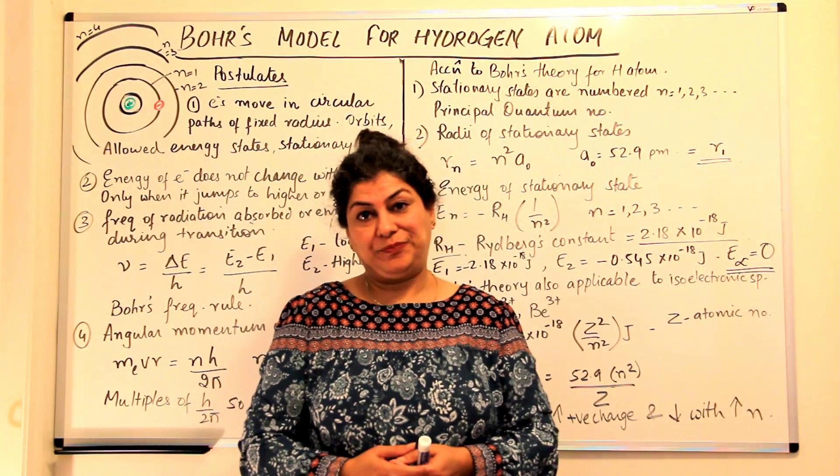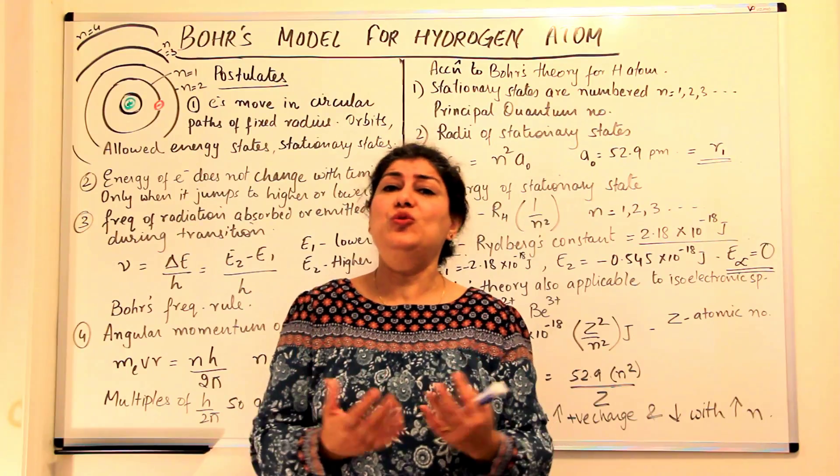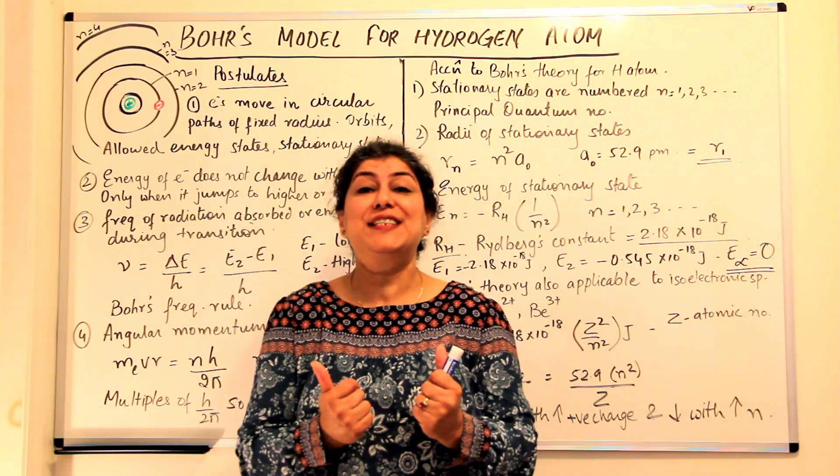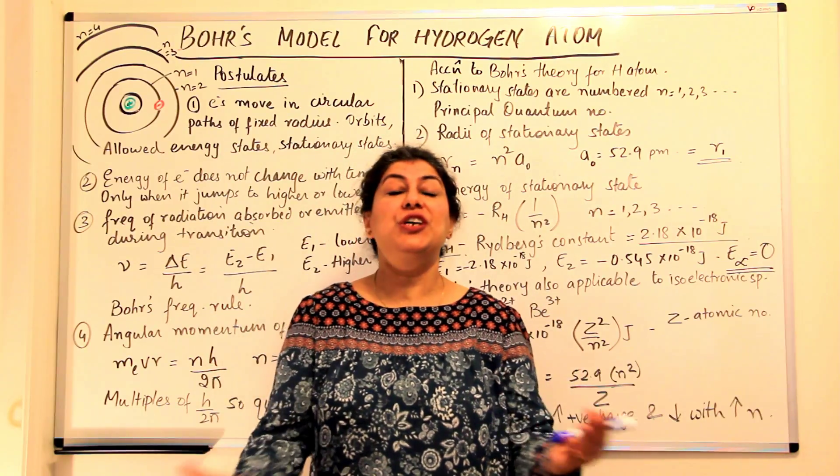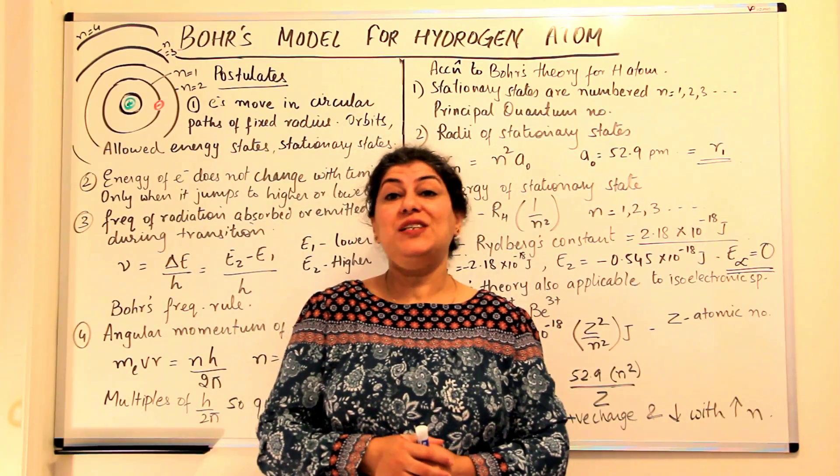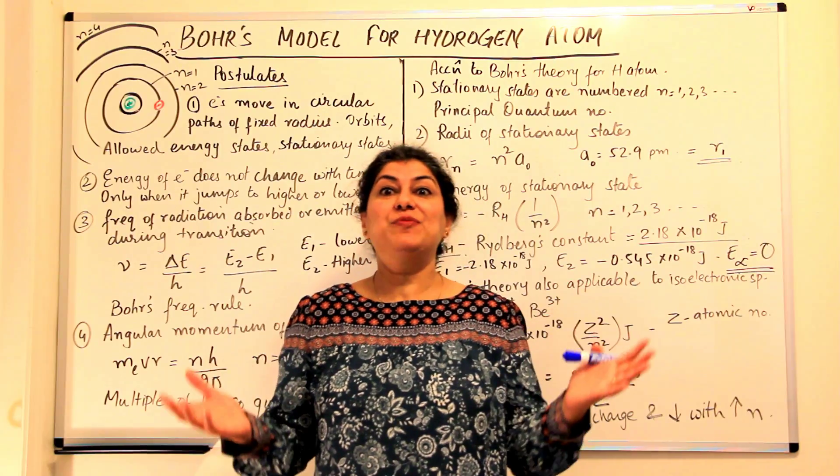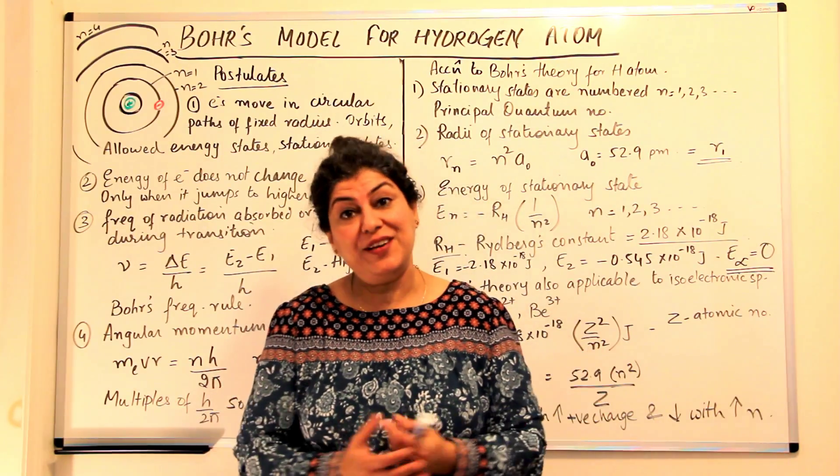So if electrons lose energy, within a fraction of a second, the electron should fall into the nucleus and the atom should collapse. But this does not happen. We know that in the universe, atoms have been existing for millions of years.